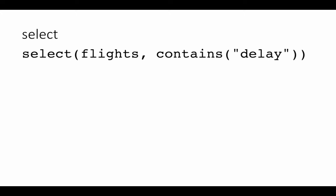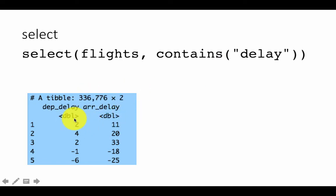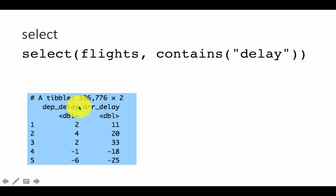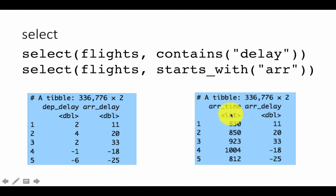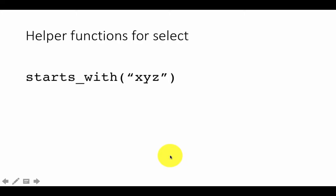You can also do other fancy things based on column names. For example, select all columns whose name contains the word 'delay' — that matches arrival delay and departure delay. You get all rows since we are not putting any conditions on rows. You could use contains('delay'), or starts_with('arr') to select columns whose names start with 'arr', like arr_time and arr_delay — giving you back only those two columns with all rows.